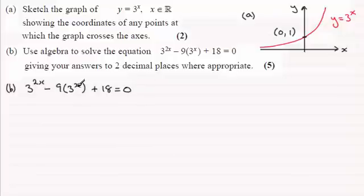So what I notice is that we've got 3 to the power x here. This is a bit of a giveaway because when we've got 3 to the power 2x, we can write this as 3 to the power x again, all squared. That's the same as 3 to the power 2x. Then we've got minus 9 times 3 to the power x and then we've got plus 18 and that equals 0.